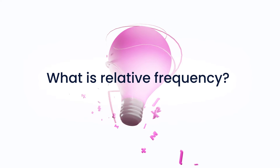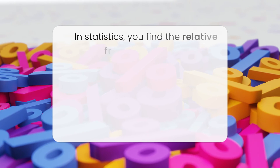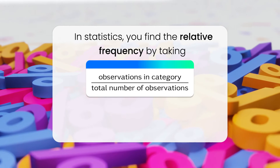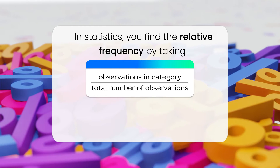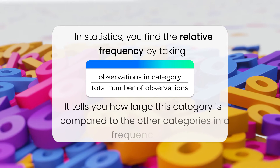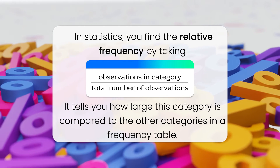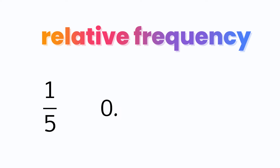What is relative frequency? In statistics, you find the relative frequency by taking the observations in a category divided by the total number of observations. The relative frequency tells you how large a category is compared to the other categories in a frequency table. It can be given as a fraction, decimal, or percentage.